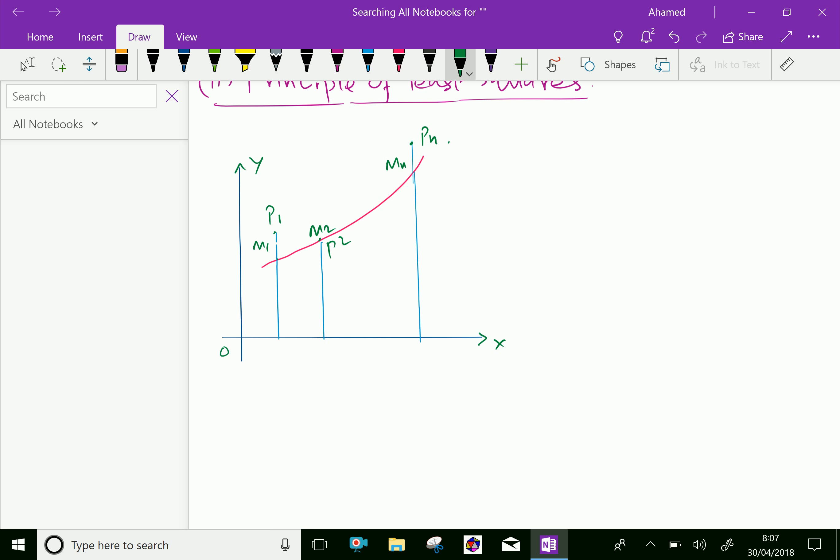Now let P1 equal x1, y1 and P2 equal x2, y2. These are coordinate points, and like that Pn equals xn and yn. We have n sets of observations, and let y equal f(x) be the suggested relationship between x and y.